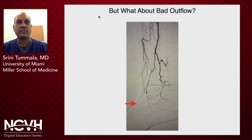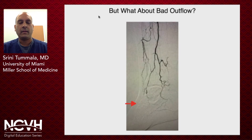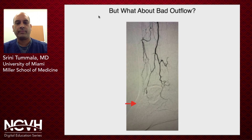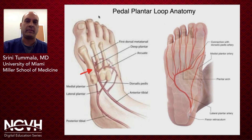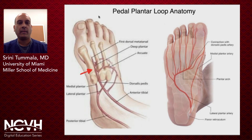But what about a patient like this who has bad outflow? The last outflow of their leg is compromised. What do you do in these cases? You have to really understand the anatomy if you're going to treat these types of patients.